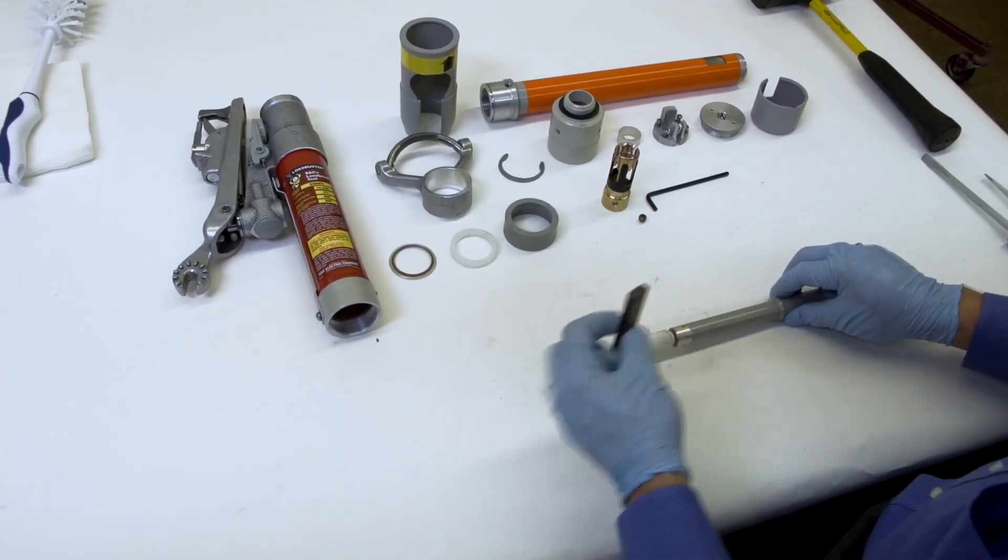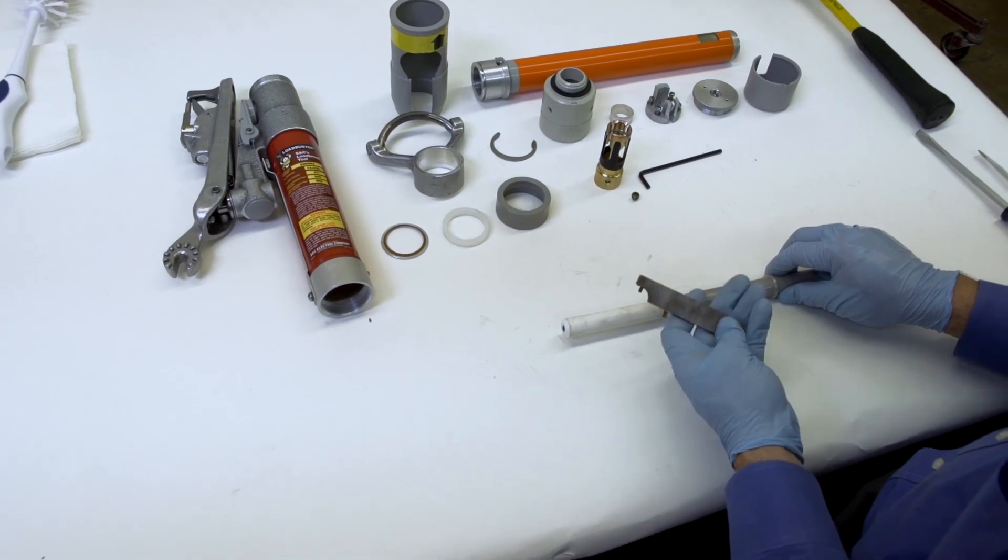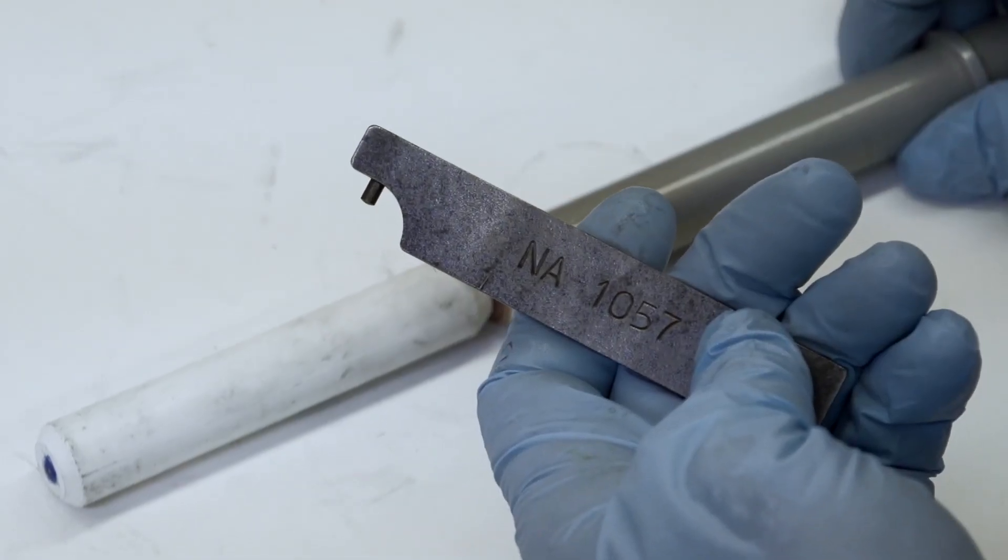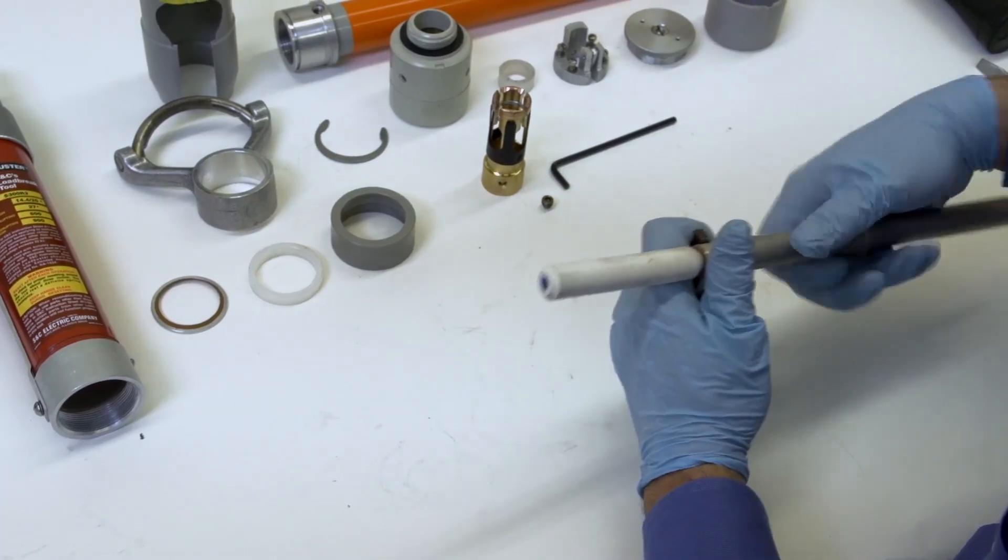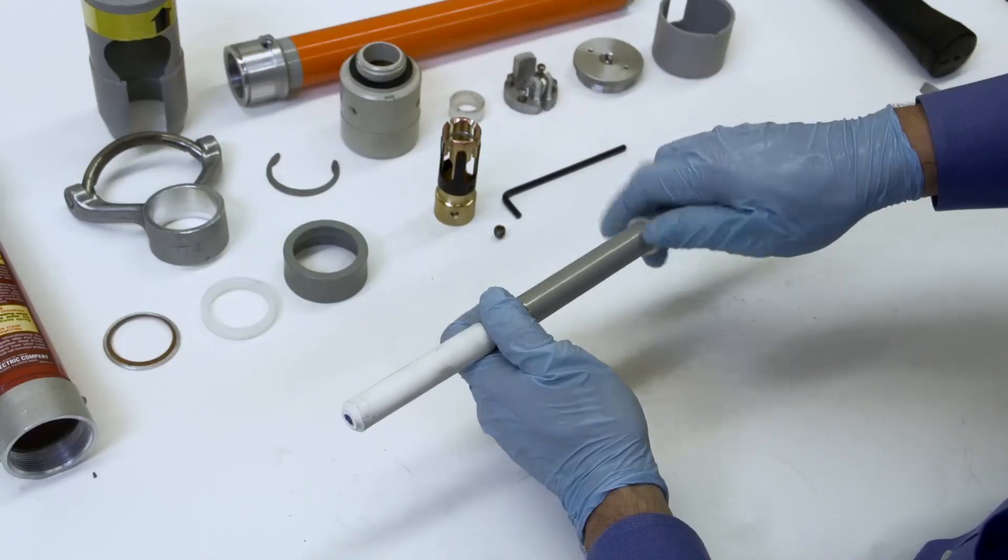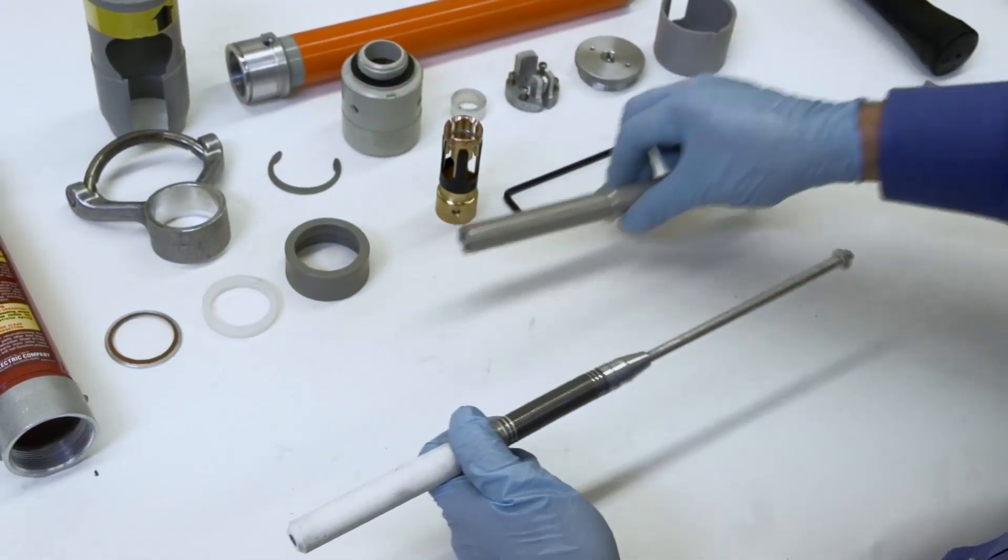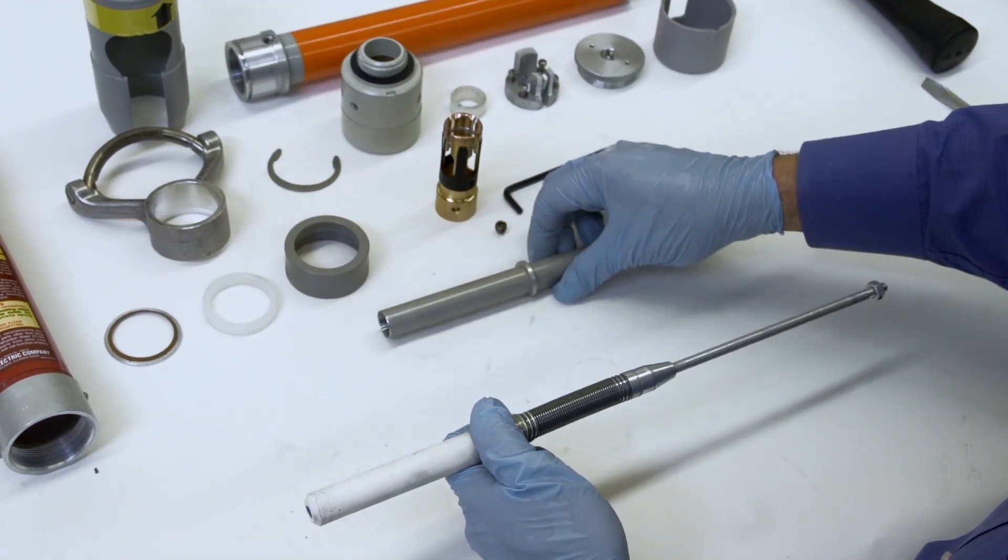Unscrew the contact tube from the moving contact assembly using a drift pin or S&C spanner wrench NA1057. Remove the tube. This completes disassembly of the Loadbuster tool.